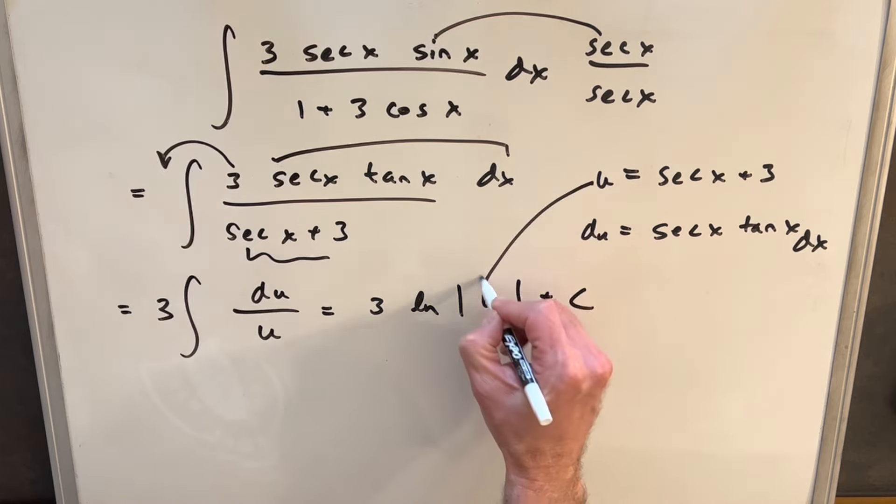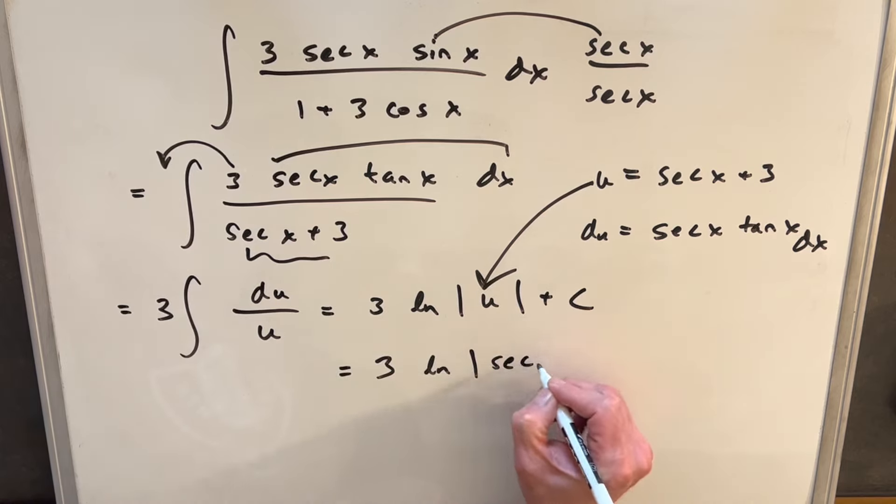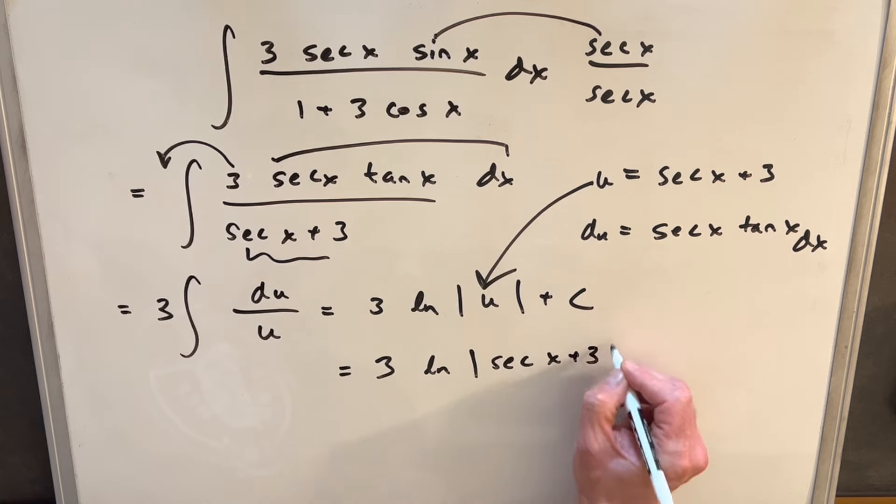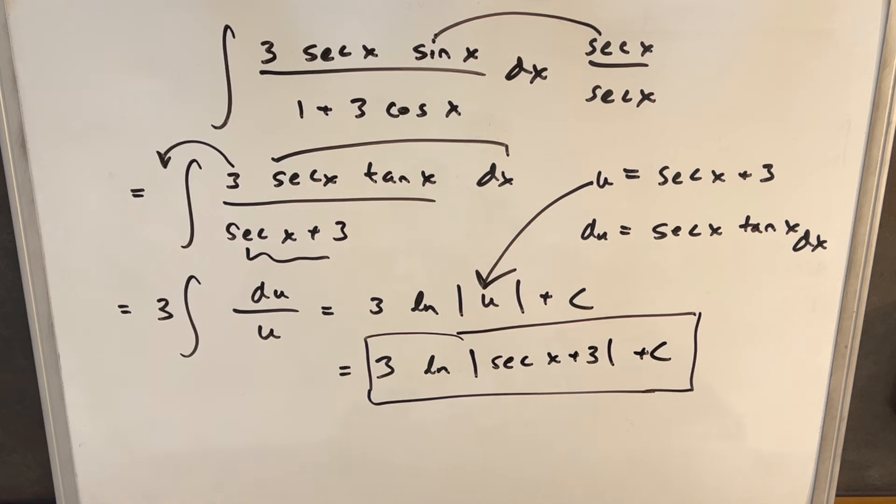And what we can do is back substitute. So for our final solution, we're going to have 3 natural log absolute value, secant x plus 3 plus c. And we're done. That's it. Thank you for watching. Please like and subscribe. Have a good day.